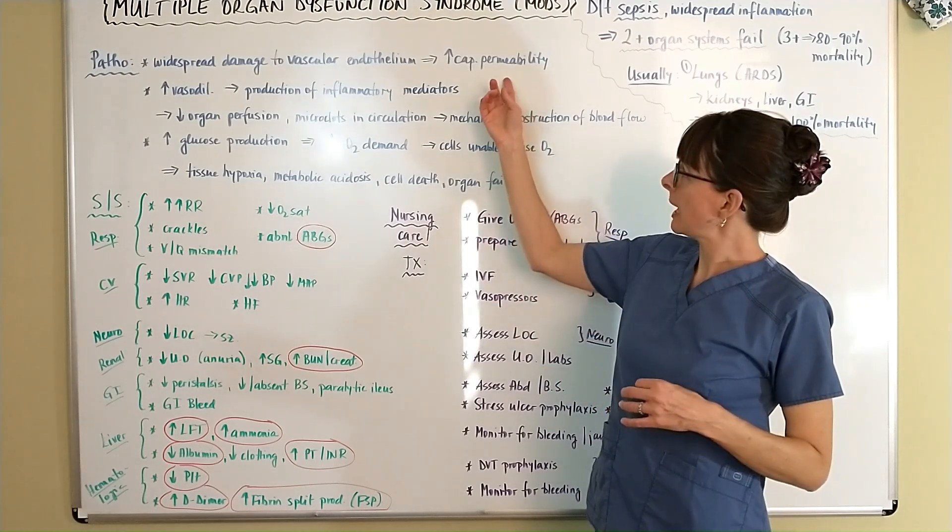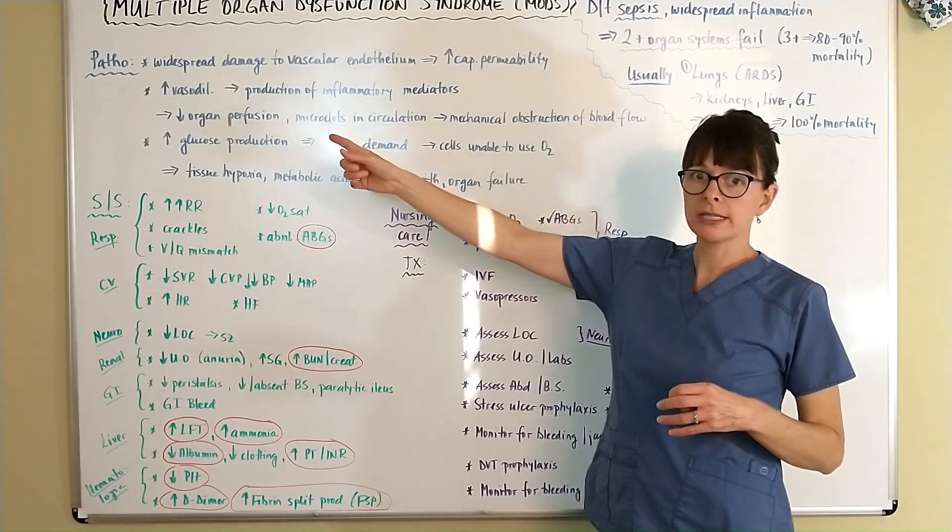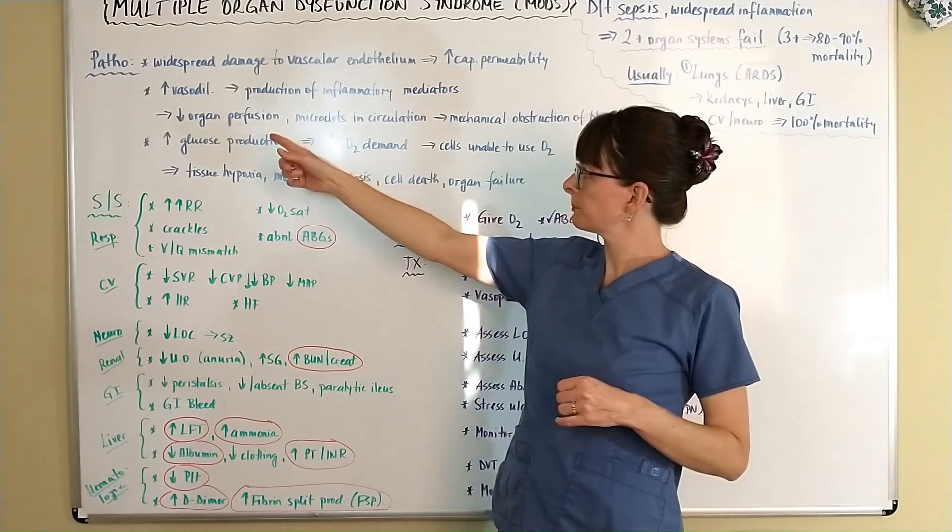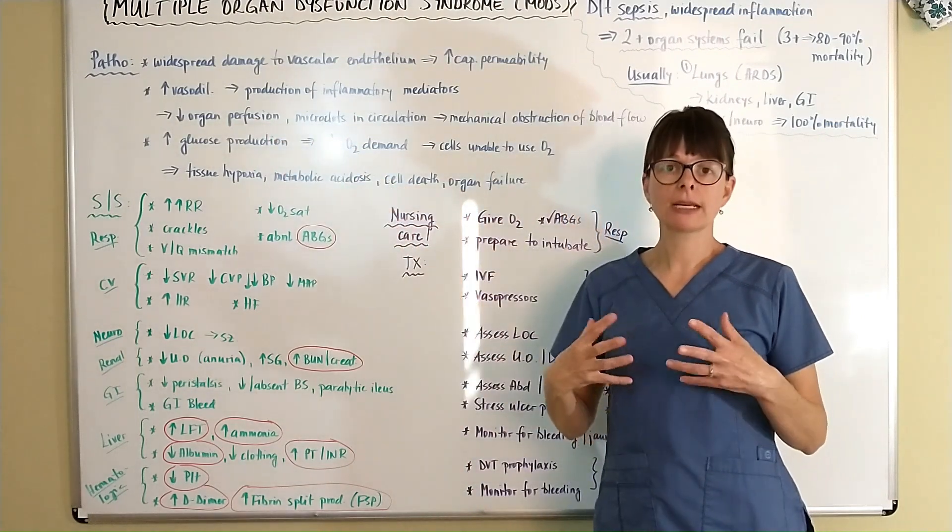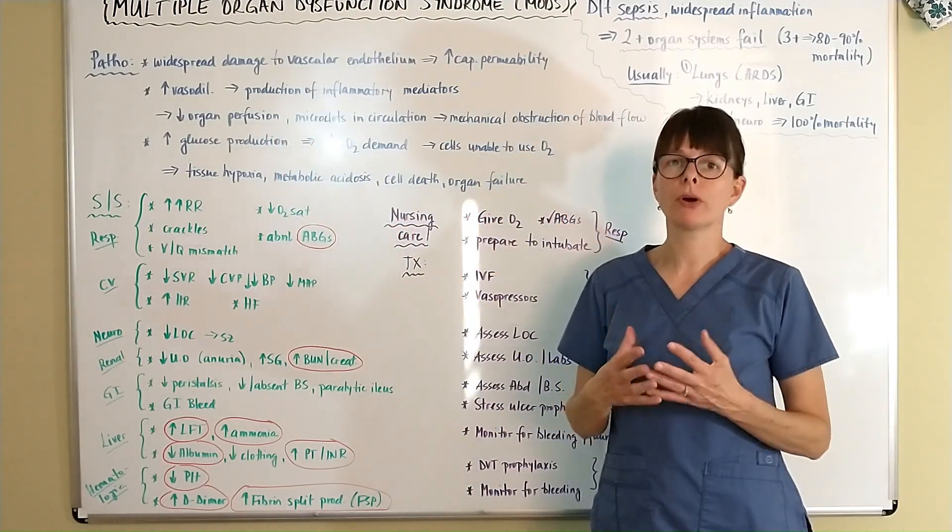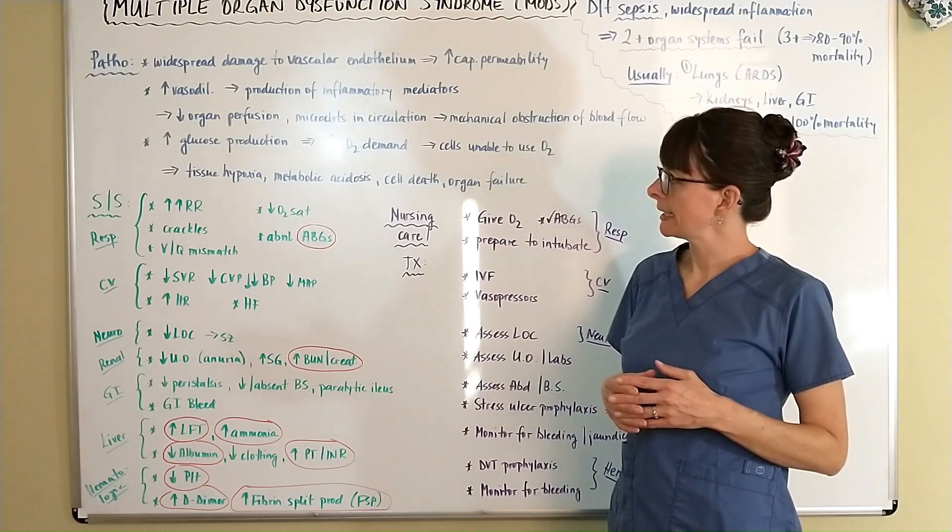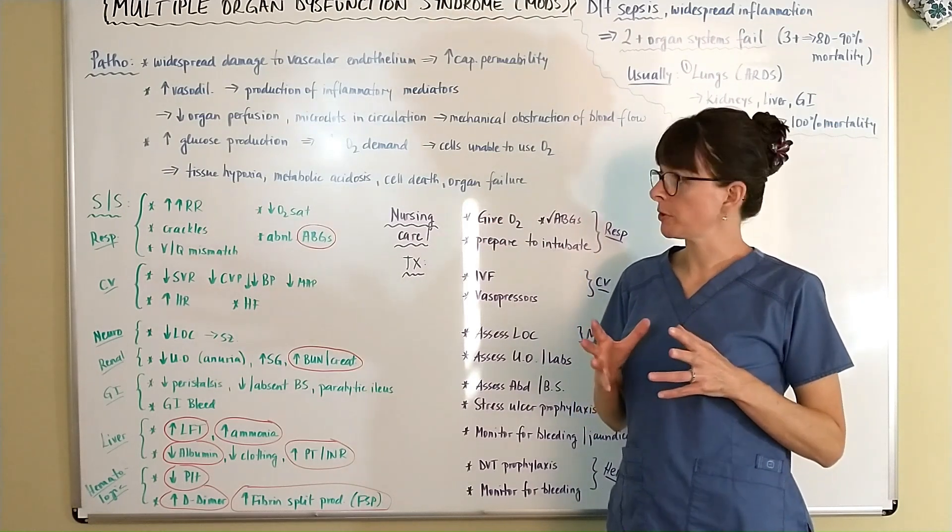And this massive capillary permeability leads to vasodilation and the vasodilation again leads the body to produce more of these inflammatory mediators that then cause the slow blood pressure.